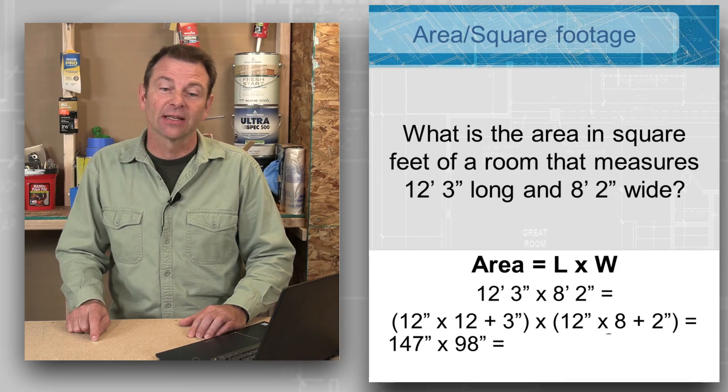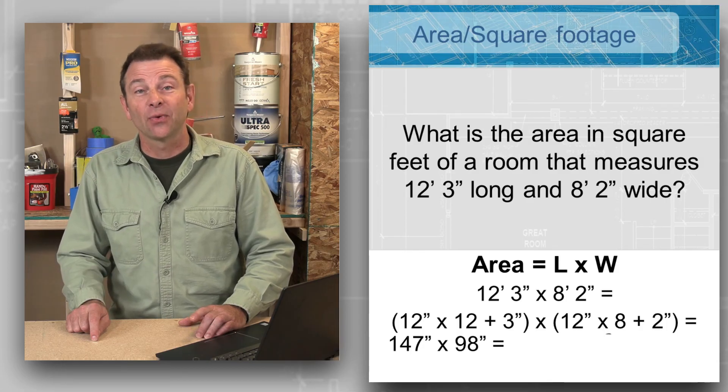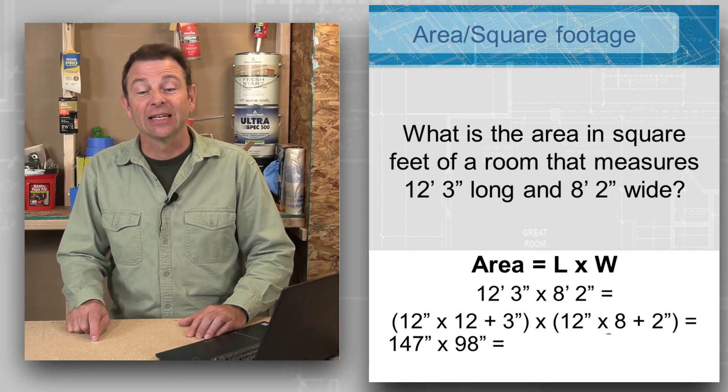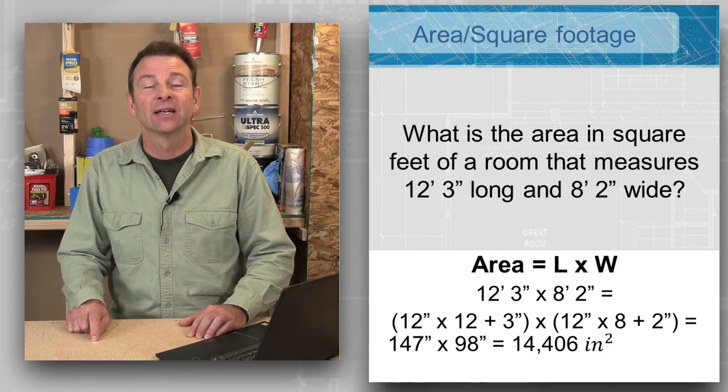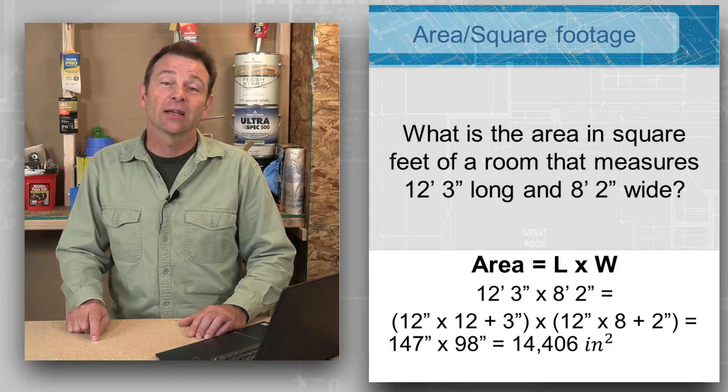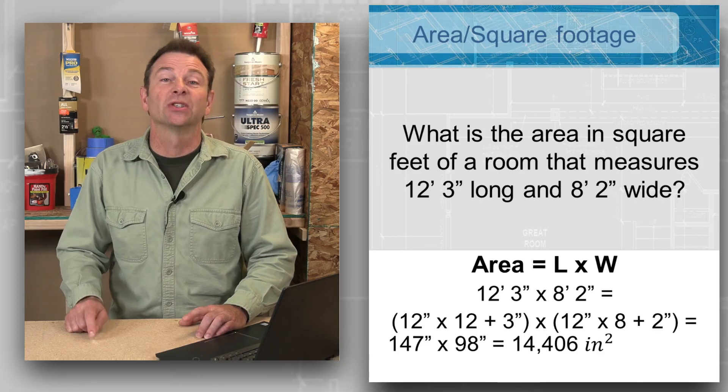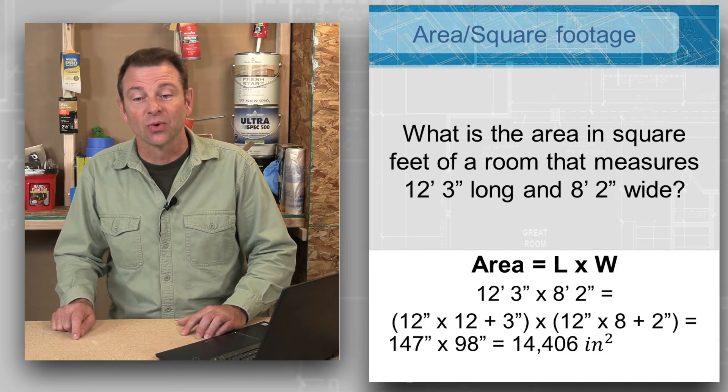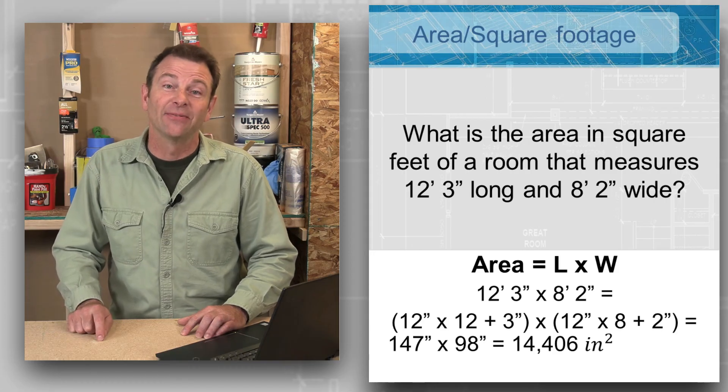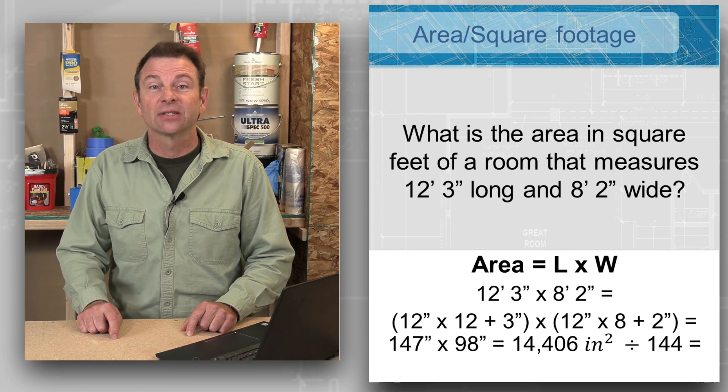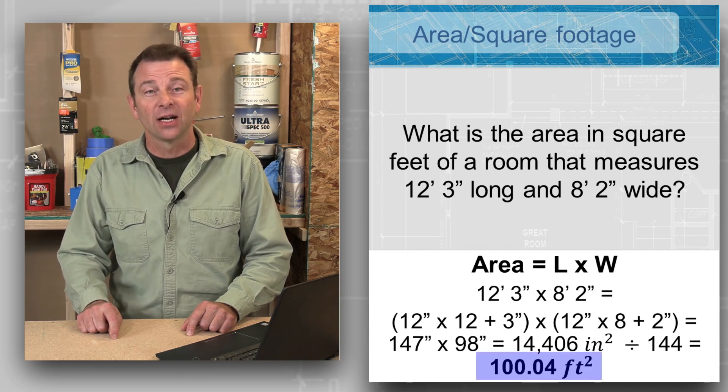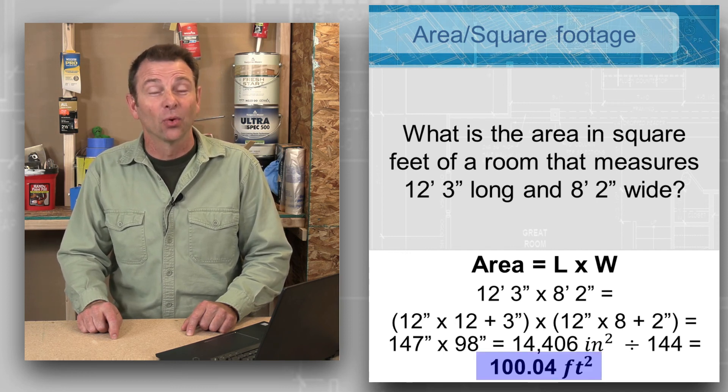This is a simple calculation we can make. So we have 147 inches times 98 inches. This is going to give us our 14,406 square inches. Now we can convert this to square feet, which is what our original intention was. We're going to do that by dividing it by 144, which is going to give us our square feet of just over 100. It's going to be 100.04 square feet.